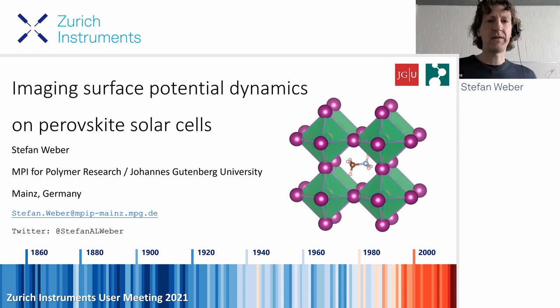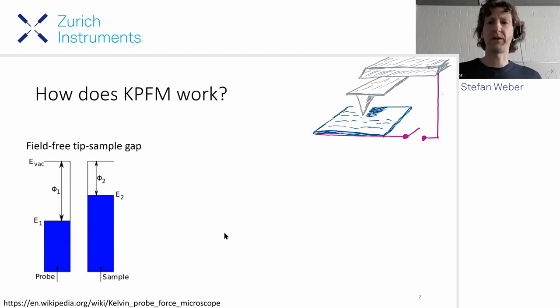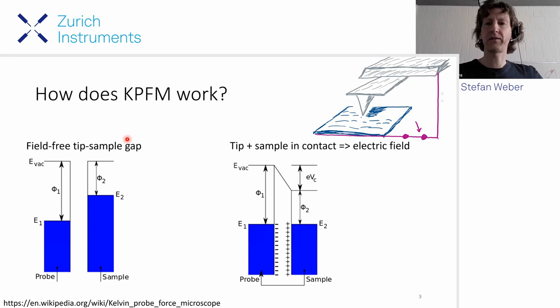So the basic principle of Kelvin probe is that we have the tip and the surface. If we have two metallic materials with different work functions, as soon as we establish an electrical connection between the tip and the surface, the Fermi levels will align, leading to electrons flowing from one side to the other. If the tip and surface are close to each other, there will be surface charges and an electrostatic force between them, which we can sensitively detect.